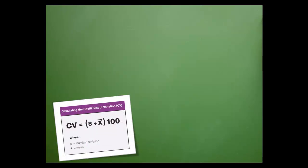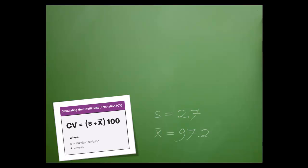Let's move our formula down to the corner, just in case we need it. These are the values for our standard deviation and the mean. Let's begin by copying down the formula and then substituting the values for the standard deviation and the mean.